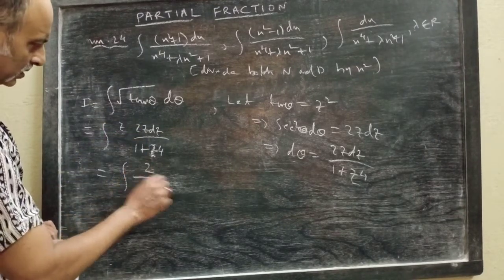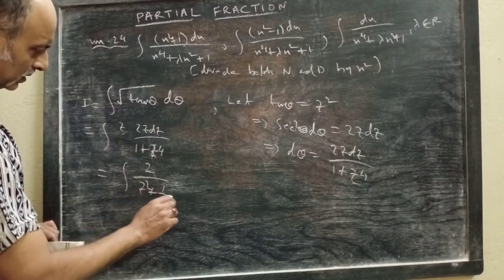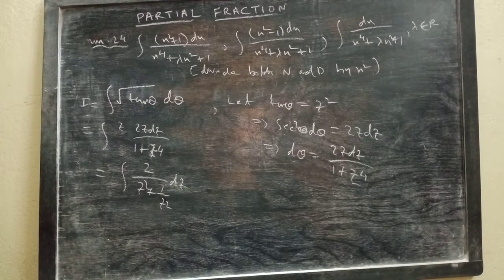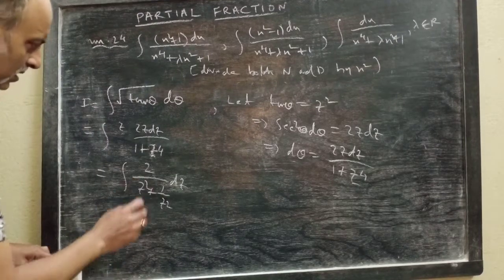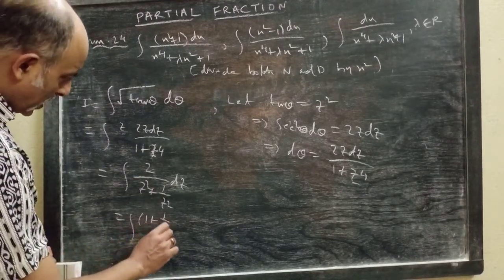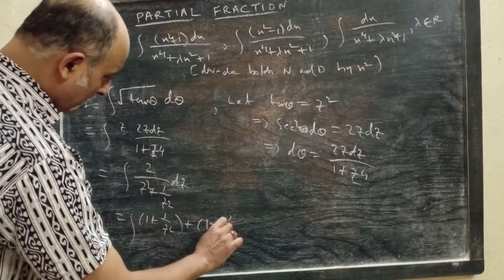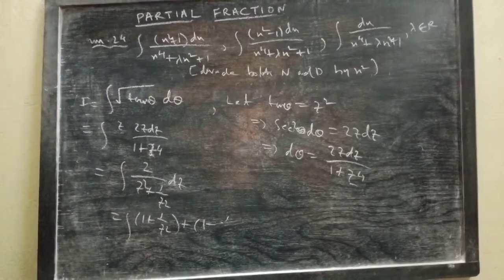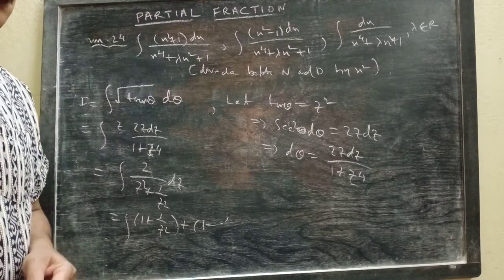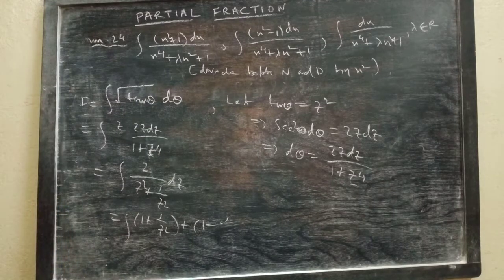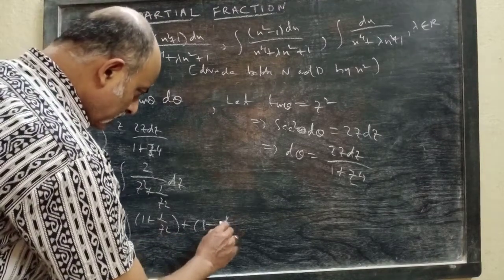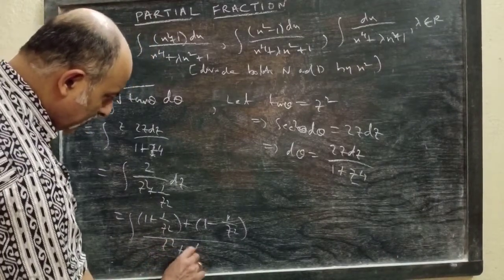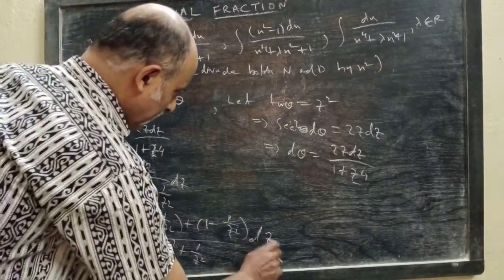Now dividing both numerator and denominator by z², we get 2 · z / (z² + 1/z²) dz. We have done this in my last class, so I am writing: instead of z² + 1/z², I write (1 + 1/z²) + (1 − 1/z²) divided by z² + 1/z².